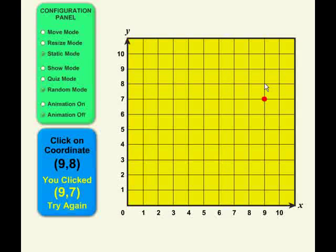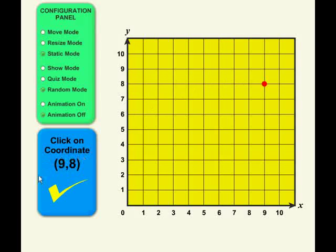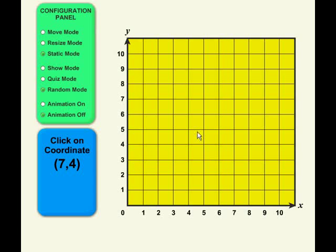If I click on 9-8, which is the right answer, I get a little check mark, and if the animation had been on, I would get the cool little animation. After you choose the right answer, you get a new coordinate pair, and that's how the random mode works.